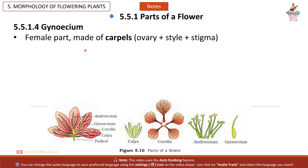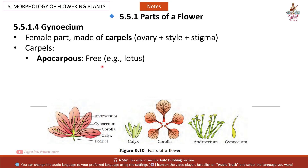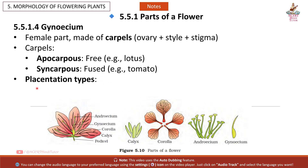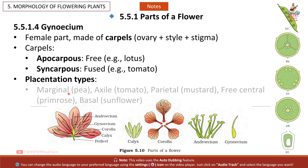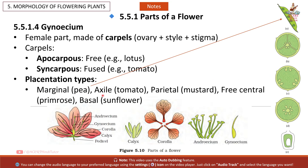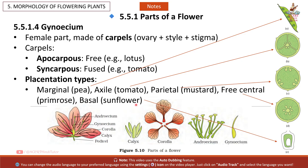Gynoecium: the female part, made of carpels (ovary plus style plus stigma). Carpels may be apocarpous — free, e.g. lotus — or syncarpous — fused, e.g. tomato. Placentation types: marginal (pea), axile (tomato), parietal (mustard), free central (primrose), basal (sunflower).